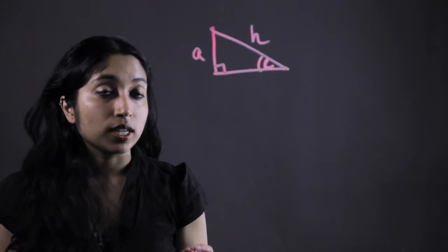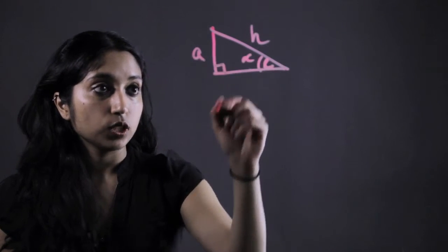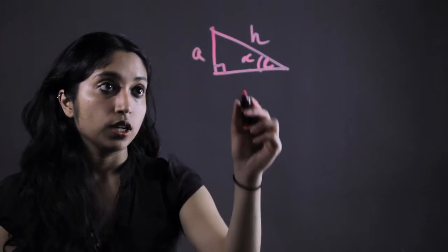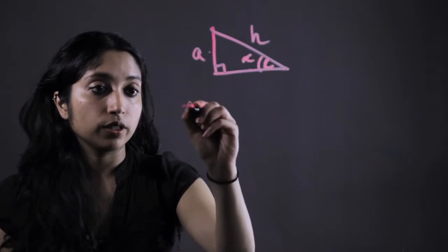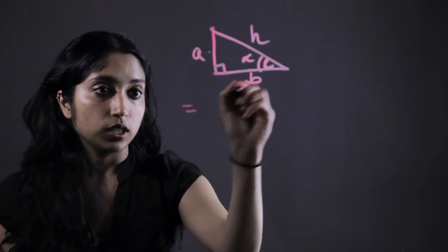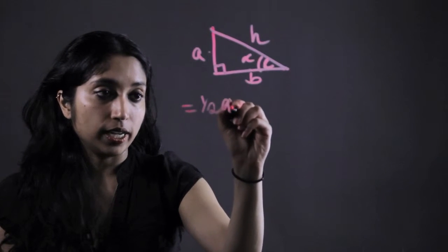So let's say we were given an angle. We can use basic trigonometry to solve for one of these missing sides because the formula for the area of a triangle is equal to one half a times b.